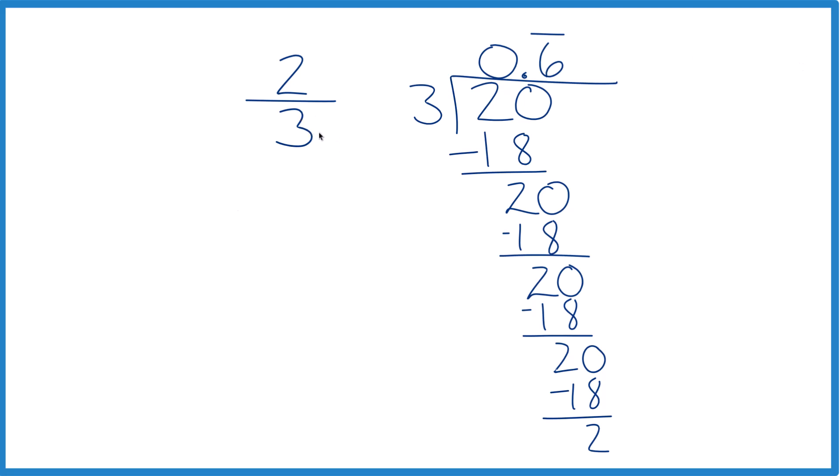This is Dr. V writing two-thirds as a decimal and rounding it to the tenths, hundredths, and thousandths place. Thanks for watching.